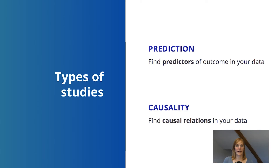Basically you could say that there are two types of studies: there are predictive studies and there are causal studies. The main difference is that in studies where we want to study causality, we're looking at a factor that is causally related with a certain outcome.